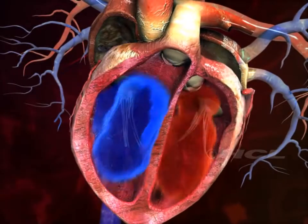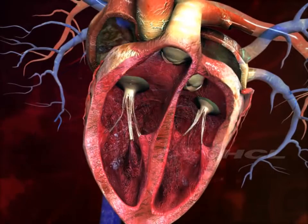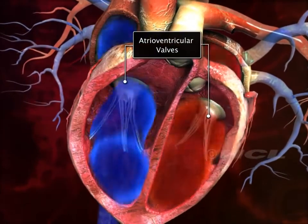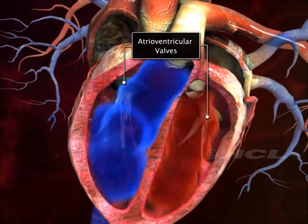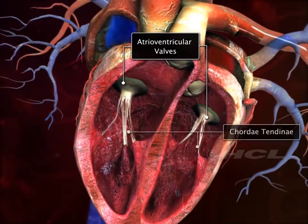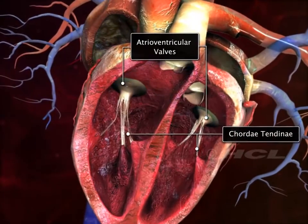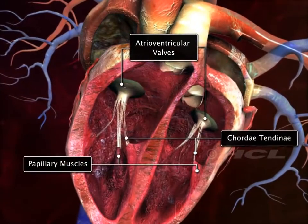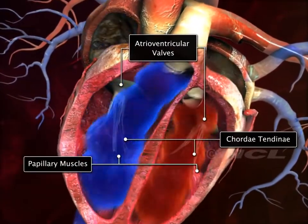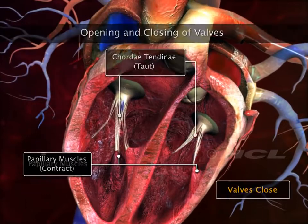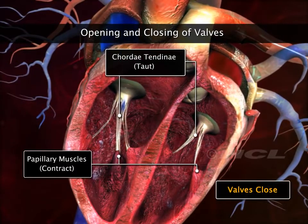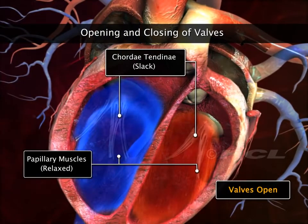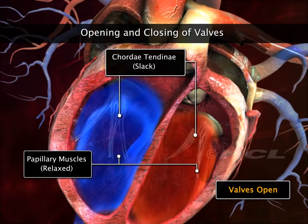The leaflets of these atrioventricular valves are connected to fibrous tissue called the chordae tendineae, which in turn are attached to papillary muscles. Contraction and relaxation of these muscles make the valves open and close.